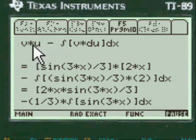And here's the formula here. V times u minus the integral of v times du dx. And you place that all in here. That's what we're doing here.